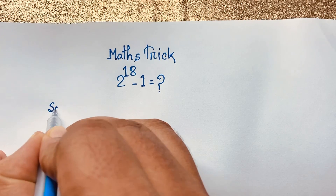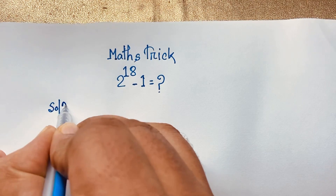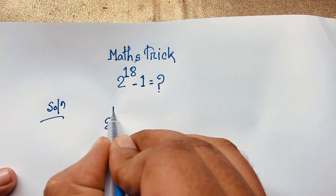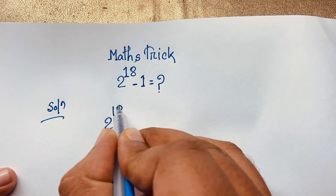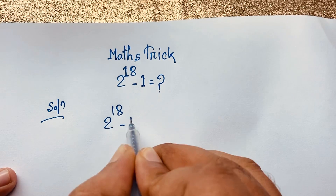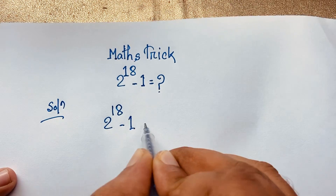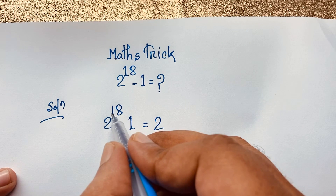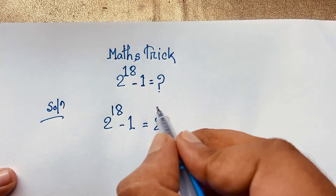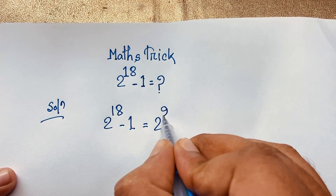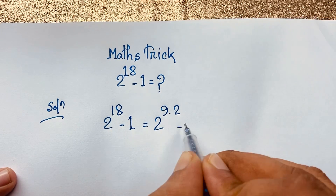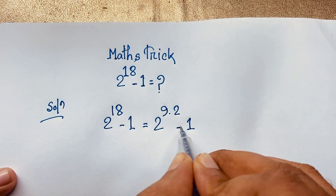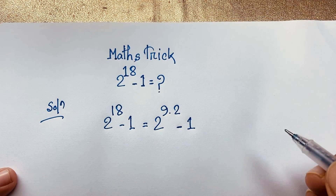Our math solution. Our question is 2 to the power 18 minus 1. Now, 2 to the power 18 — you can see it will be 9 times 2, minus 1. We know that 9 times 2 will be 18.